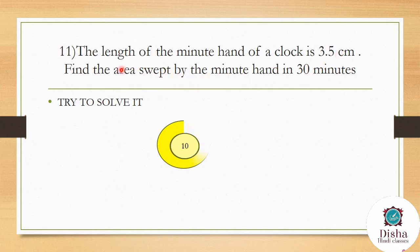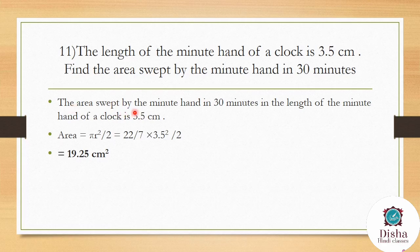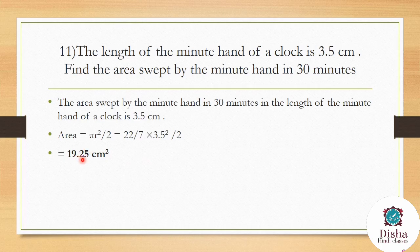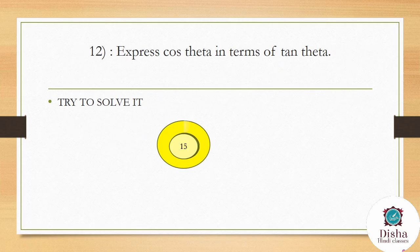The length of the minute hand of a clock is 3.5 cm. Find the area swept by the minute hand in 30 minutes. In 30 minutes the hand sweeps half a full circle, so area = πr²/2 = (22/7) × (3.5)² / 2 = 19.25 cm².